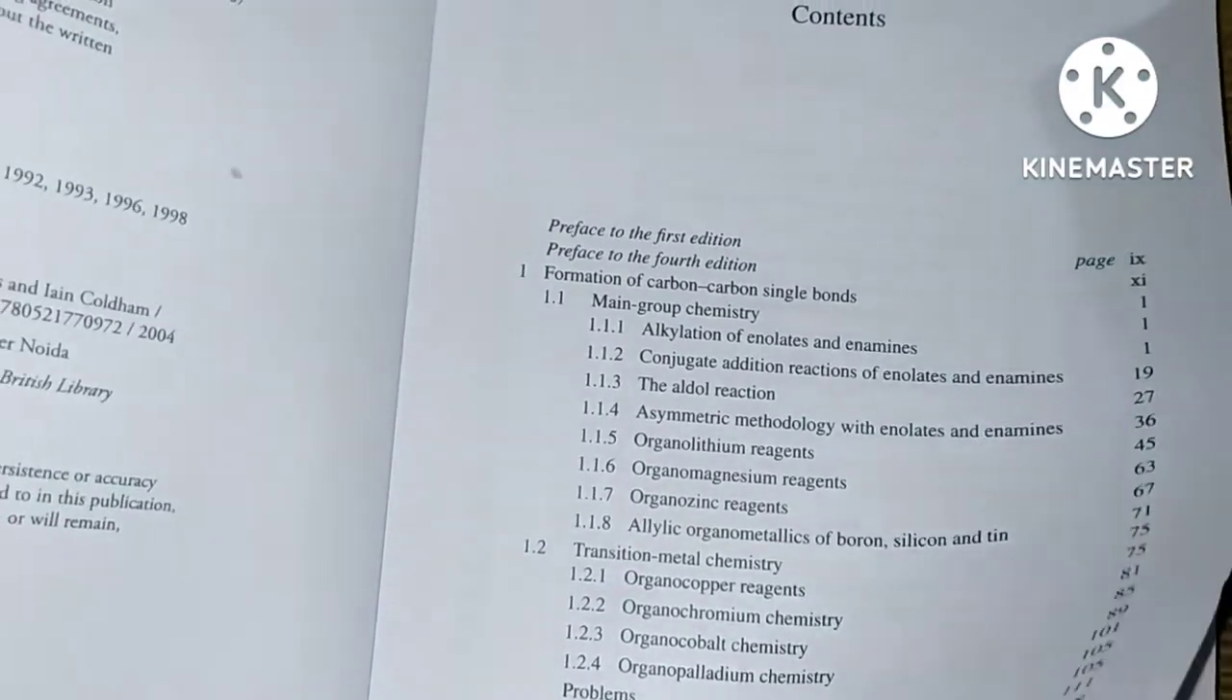As you can see, this is the fourth edition of the book by William Carruthers of organic chemistry. Let's check its chapters. This is the fourth chapter and it includes one to seven chapters, meaning seven chapters are included in this book.